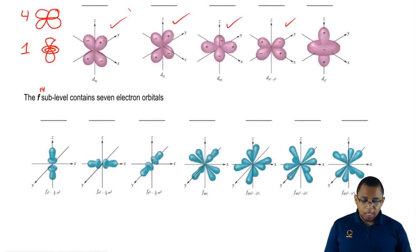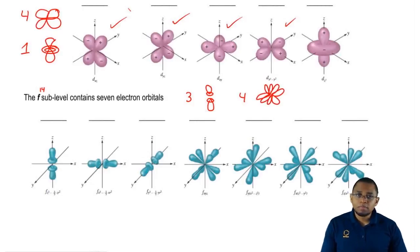For the F sublevel, three of them kind of look like this. Then four of them look like double four-leaf clovers. These shapes are going to become important for later on when we're asked questions just based on the shape of sublevels.